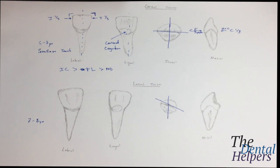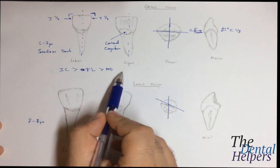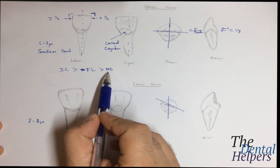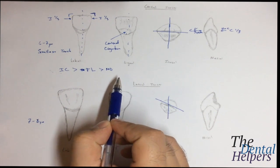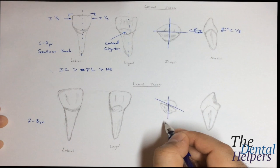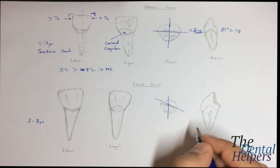Now the lateral incisors, we're going to keep with this same incisal cervical greater than the facial lingual, which is greater than the mesial distal. That all remains the same. The big thing is this distal lingual twist.